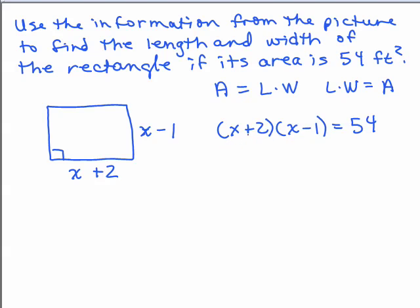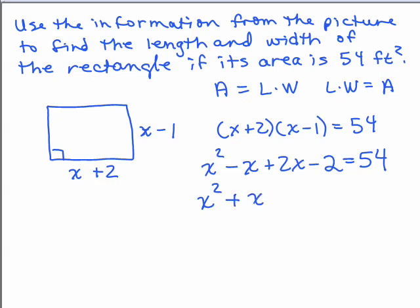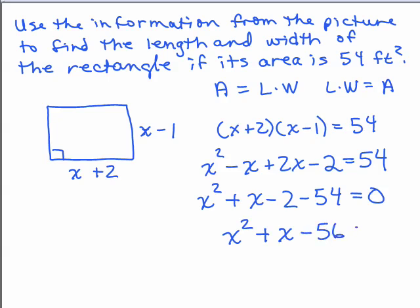I need to simplify the left-hand side. It's factored, but the right-hand side does not equal zero, so it's not helpful to be factored unless one side equals zero. We multiply this out using the FOIL method: x squared minus x plus 2x minus 2 equals 54. Combining like terms, I have x squared plus x, and then I subtract 54 from both sides so it equals zero: x squared plus x minus 56 equals zero.